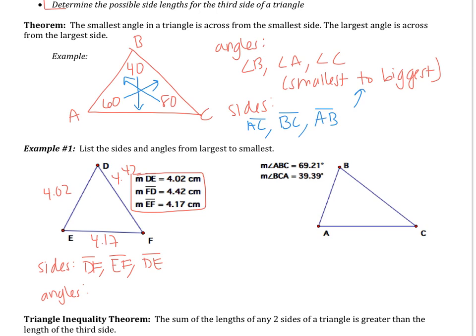Angles are what's new here. The biggest side is across from the biggest angle, so angle E is the largest. The medium side is across from the medium angle, so angle D is the medium angle. DE at 4.02 is the smallest side, so angle F will be the smallest angle.